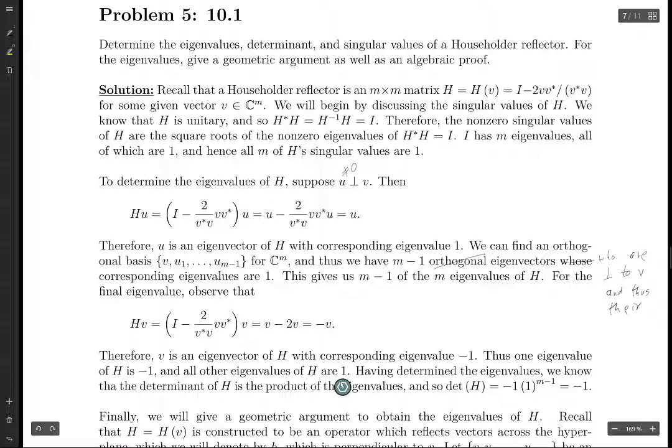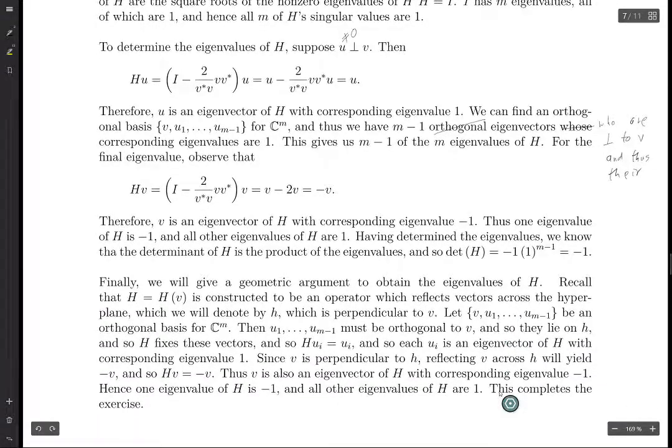And now that we know the eigenvalues, we know that the determinant of any matrix is a product of its eigenvalues, and so its determinant is just you take negative 1, and you multiply it by 1 a whole bunch of times, and you just end up with minus 1. And so its determinant is minus 1. And so that's all we need to know.